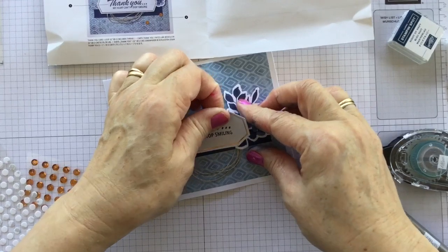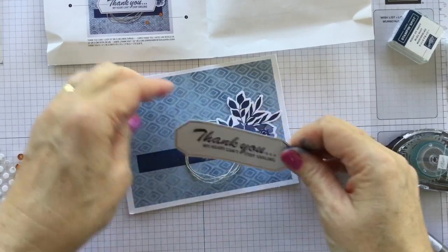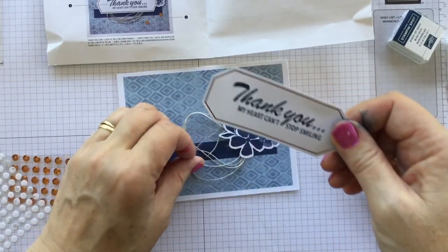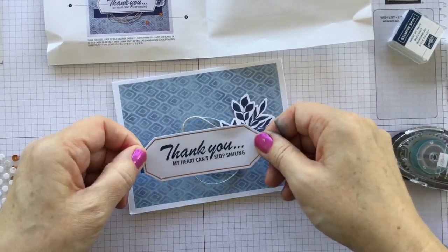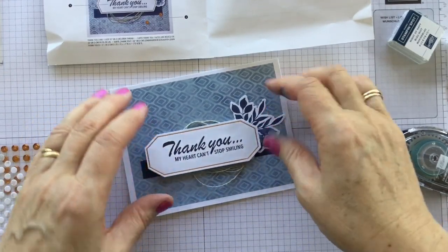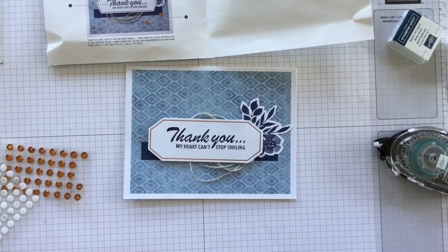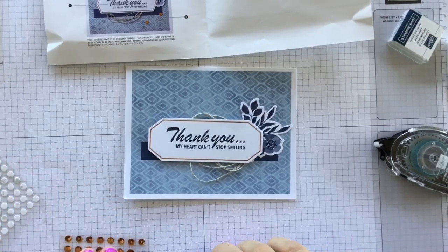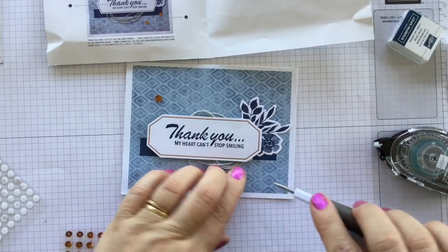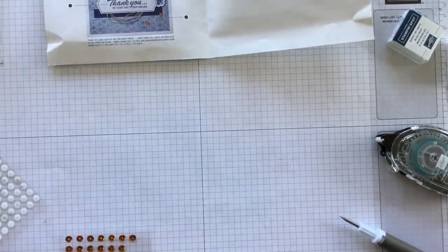Well that's not very good, I've covered up my circle, just move that up a bit. There we go. And then we're going to put a few of our little copper sequins around. Gorgeous, absolutely gorgeous.